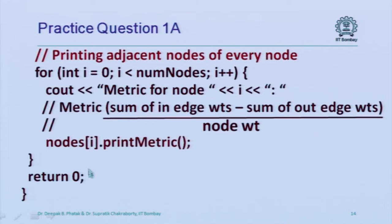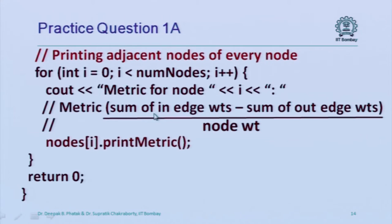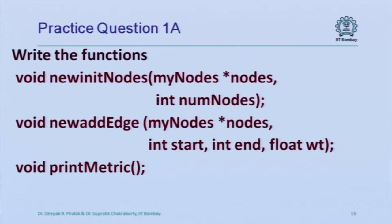Finally, print_metric should calculate sum of incoming edge weights minus sum of outgoing edge weights divided by node weight, as a public member function of my_node, so you can call it on each node. This is similar to last time's problem except now there are weights on nodes and weights on edges, and more importantly all data members are private. You must write appropriate member functions so nobody needs to access the data members directly — accessor and mutator functions for both class my_node and class linked_nodes.